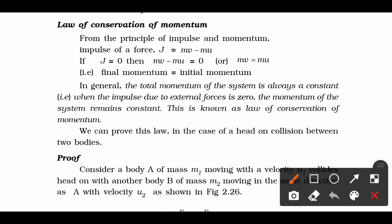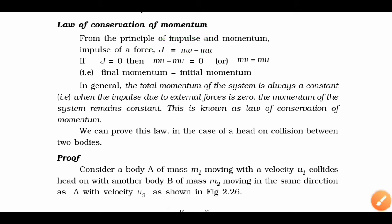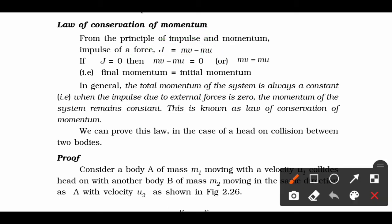Law of conservation of momentum from the principle of impulse and momentum. Impulse of a force, denoted by j, equals mv minus mu — that means change in momentum equals impulse. If impulse is zero, j equals zero, then change in momentum will also be equals to zero.